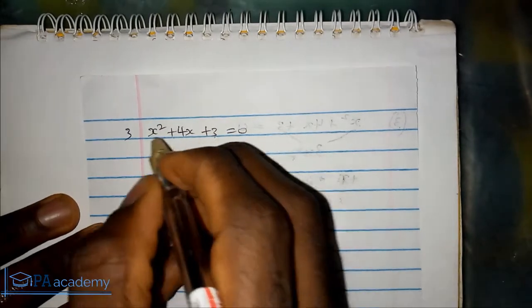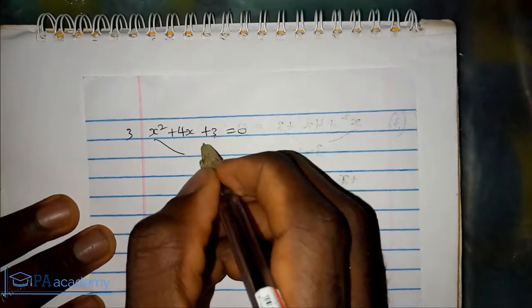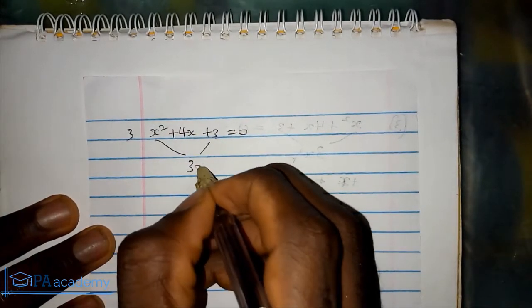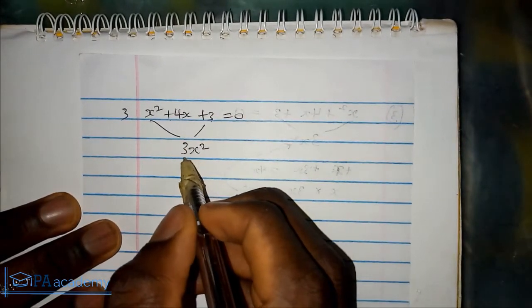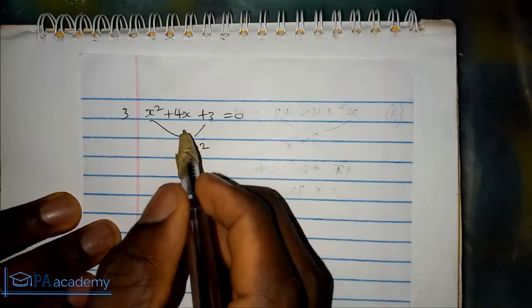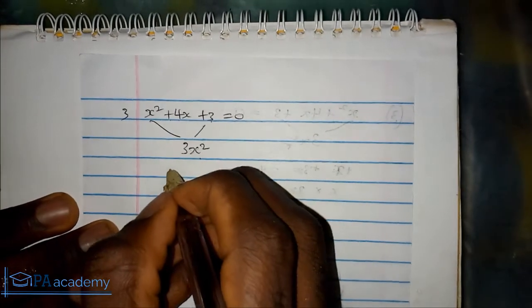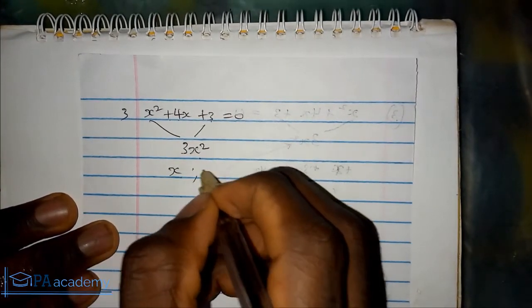If you multiply 3 by x squared, we get 3x squared. The two numbers that when multiplied give us 3x squared, and when added give us 4x, are x and 3x.